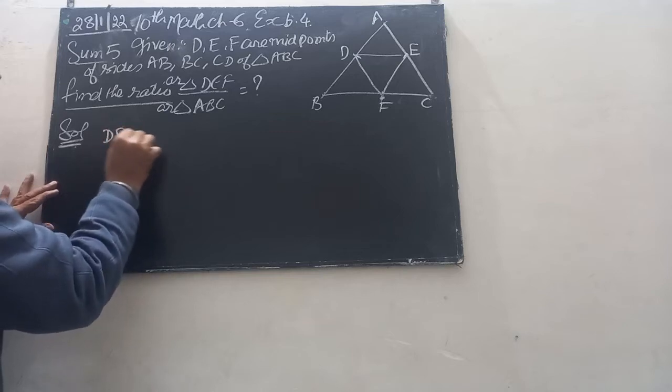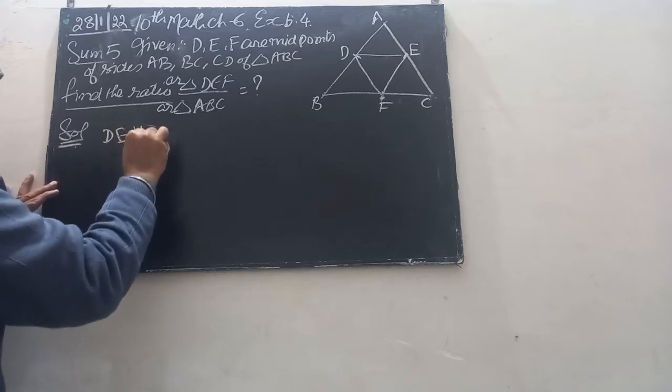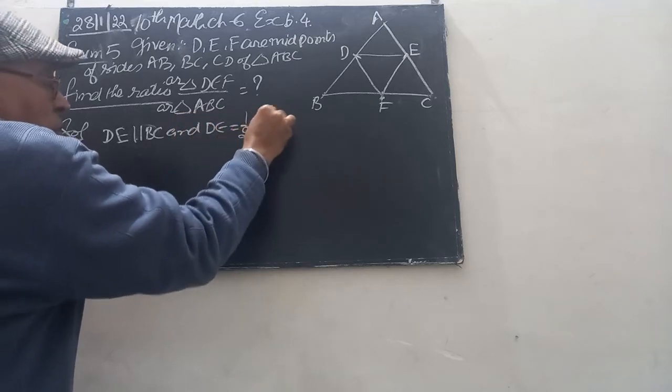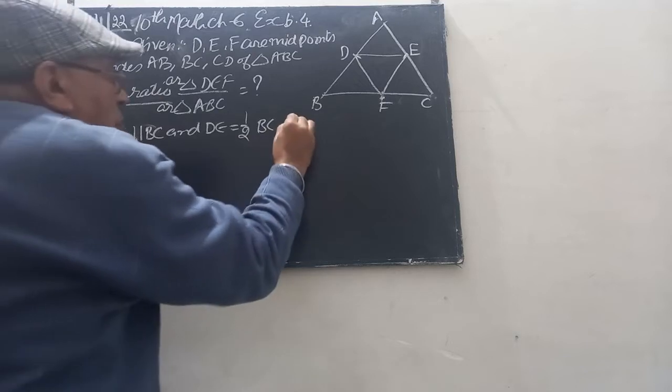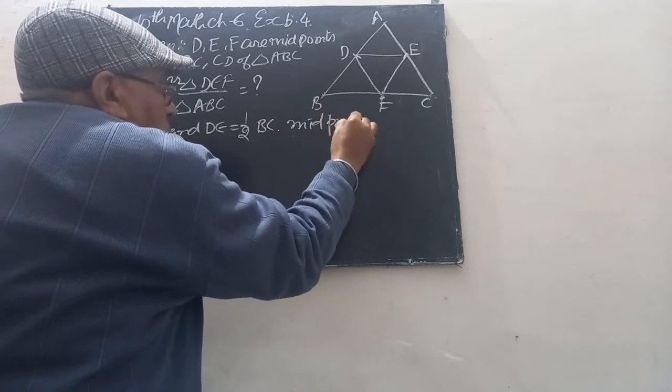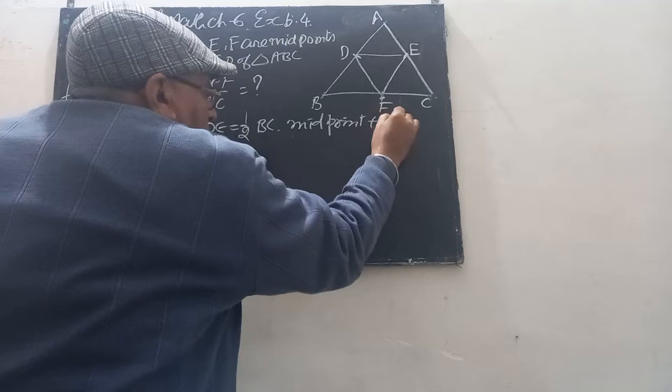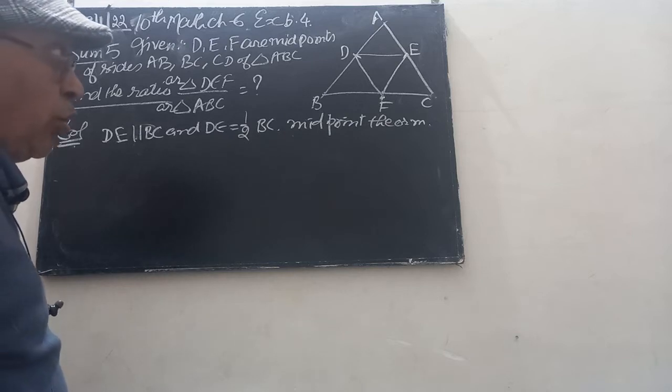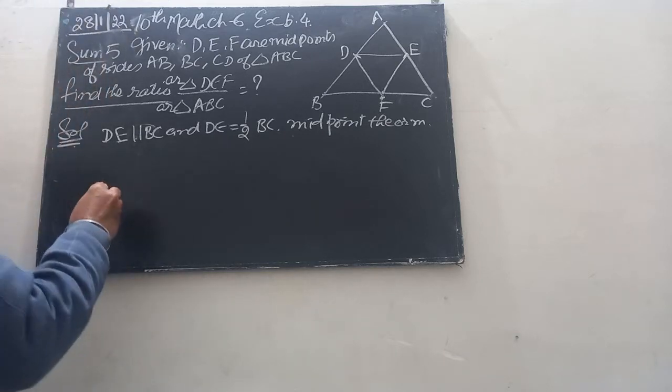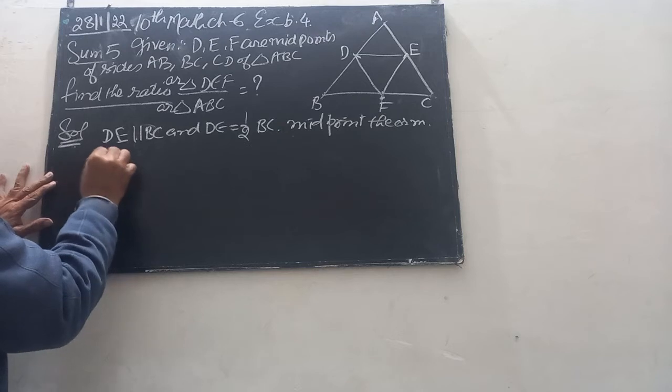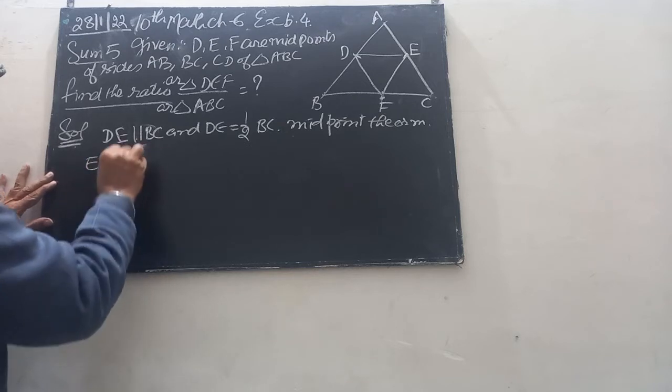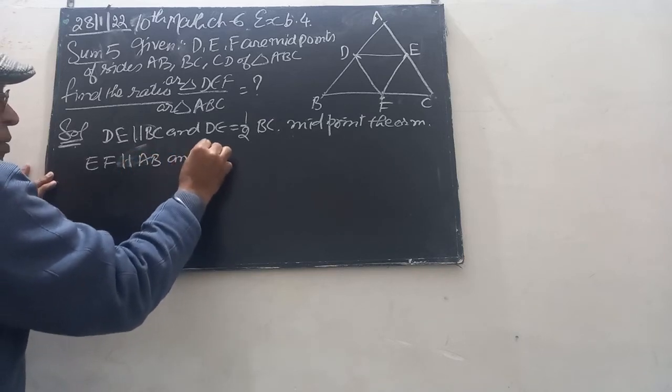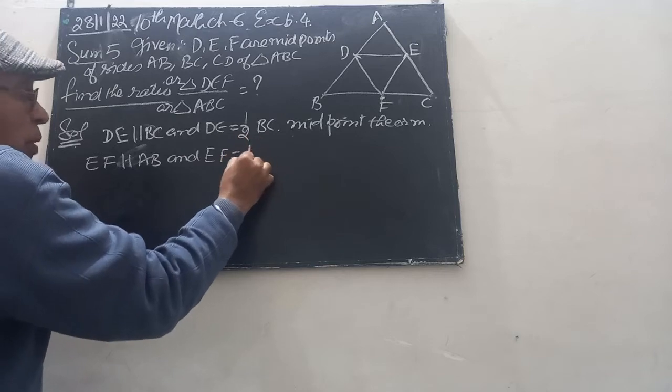DE is parallel to BC and equal to half of BC. Similarly, EF is parallel to AB and EF is equal to half of AB.